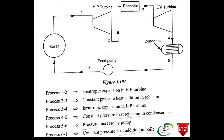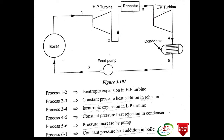Reheat Rankine Cycle. In this cycle, there are two turbines: a High Pressure (HP) turbine and a Low Pressure (LP) turbine. The first expansion takes place in the HP turbine. State 1 is before the turbine and State 2 is after the turbine.